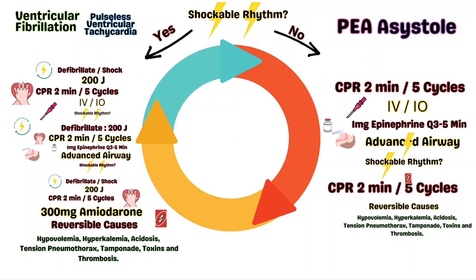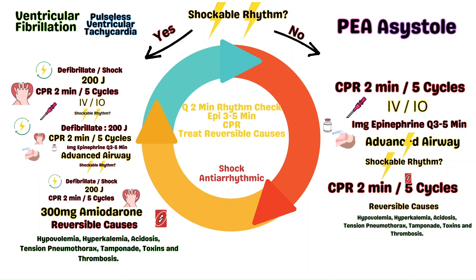As you can see, there are similarities and differences between the two pathways. Both involve rhythm checks every two minutes, epinephrine every three to five minutes, high-quality CPR, and addressing the reversible causes. On the shockable side, the difference is that a shock is delivered and an antiarrhythmic is given. In a code, you may find yourself going from one side to the other depending on what the rhythm is during the pulse check.